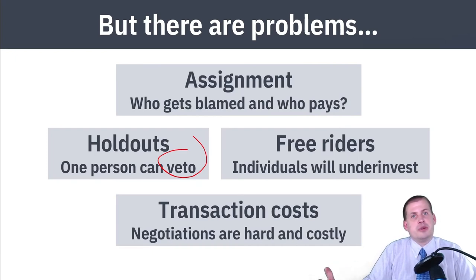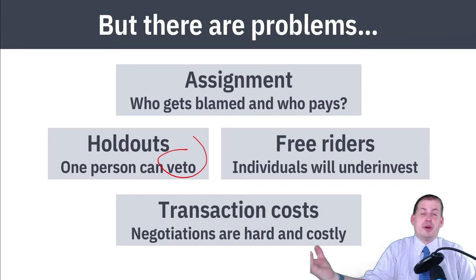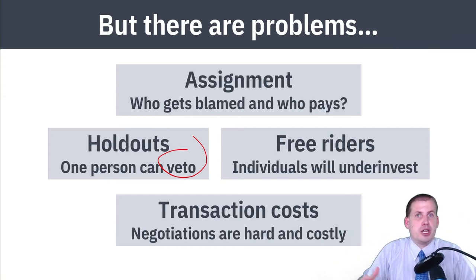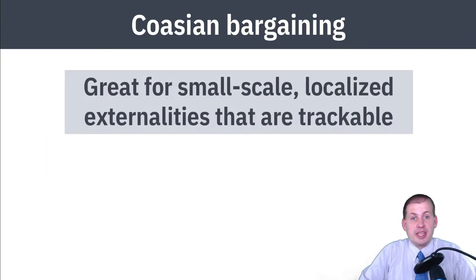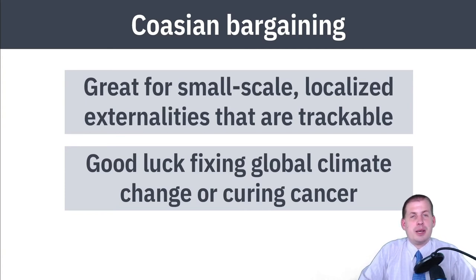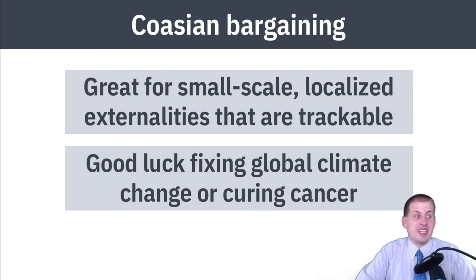Coasian bargaining works for low-level things — you can offer your neighbor $10 to not mow their lawn at 8am, or they can pay you $10 for the trouble. Either way it's a workable fix for a minor externality. But once you scale up to climate change, COVID-19, or other complex issues where it's hard to assign blame and track consequences, Coasian bargaining doesn't work. We won't fix climate change by bargaining with individual countries and firms.